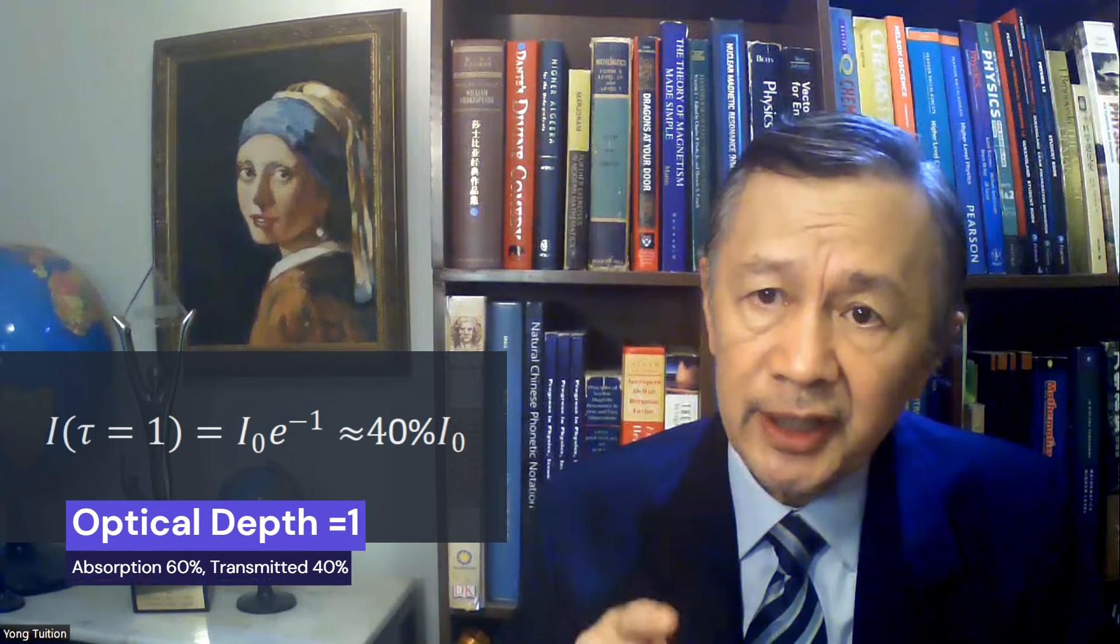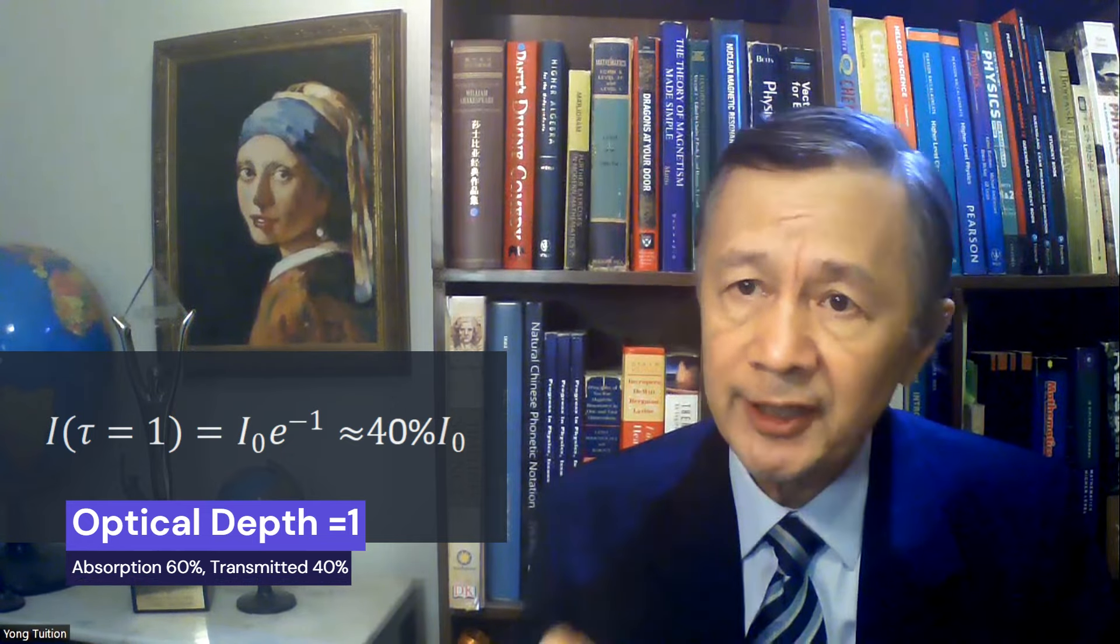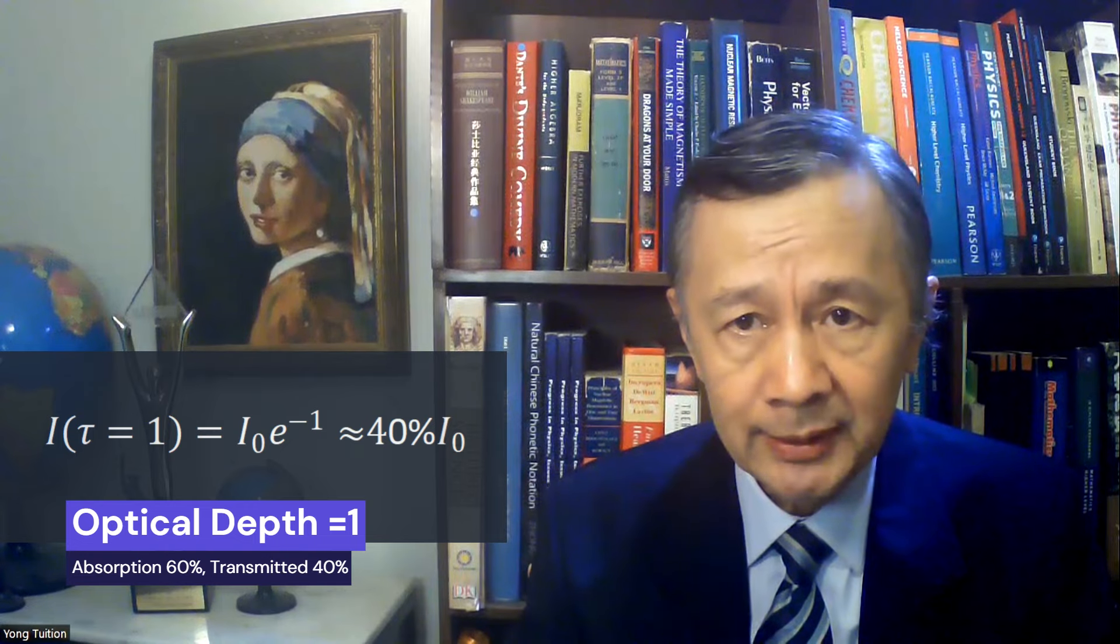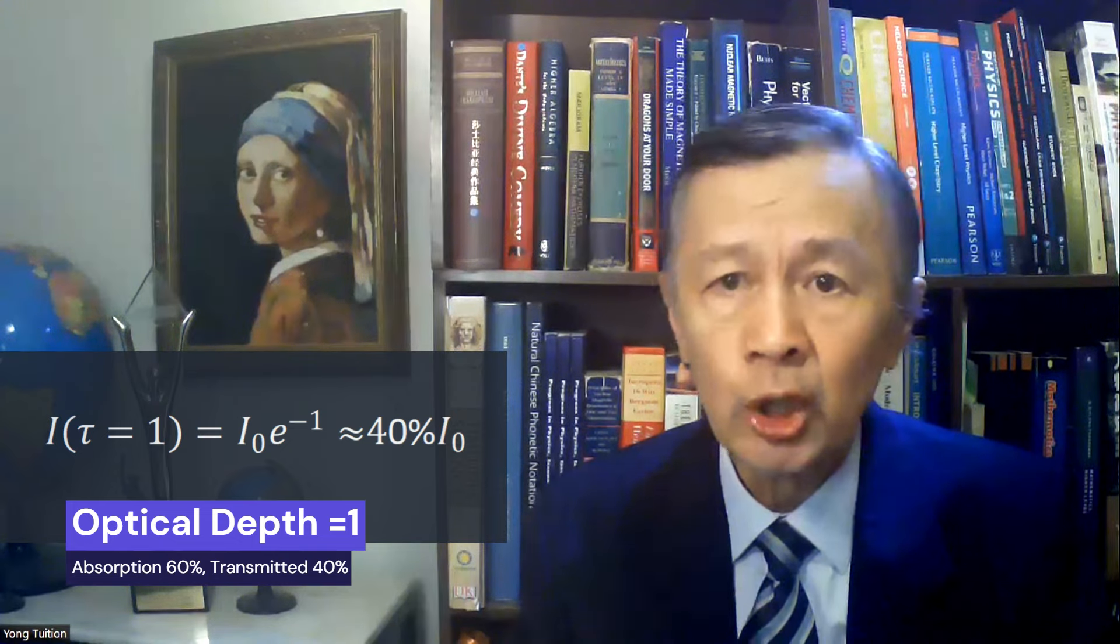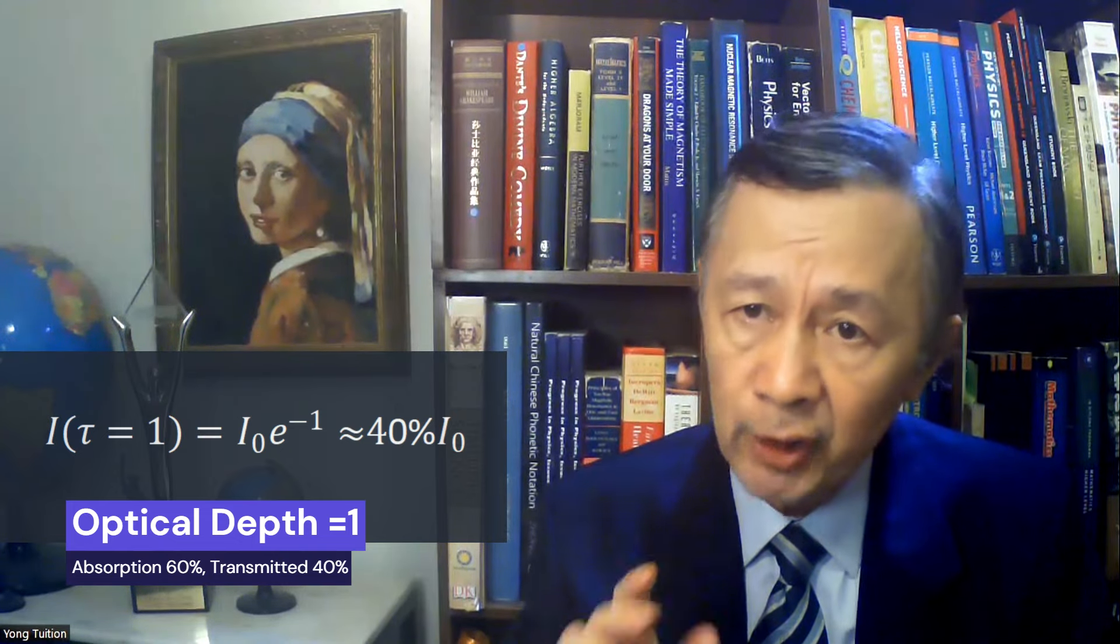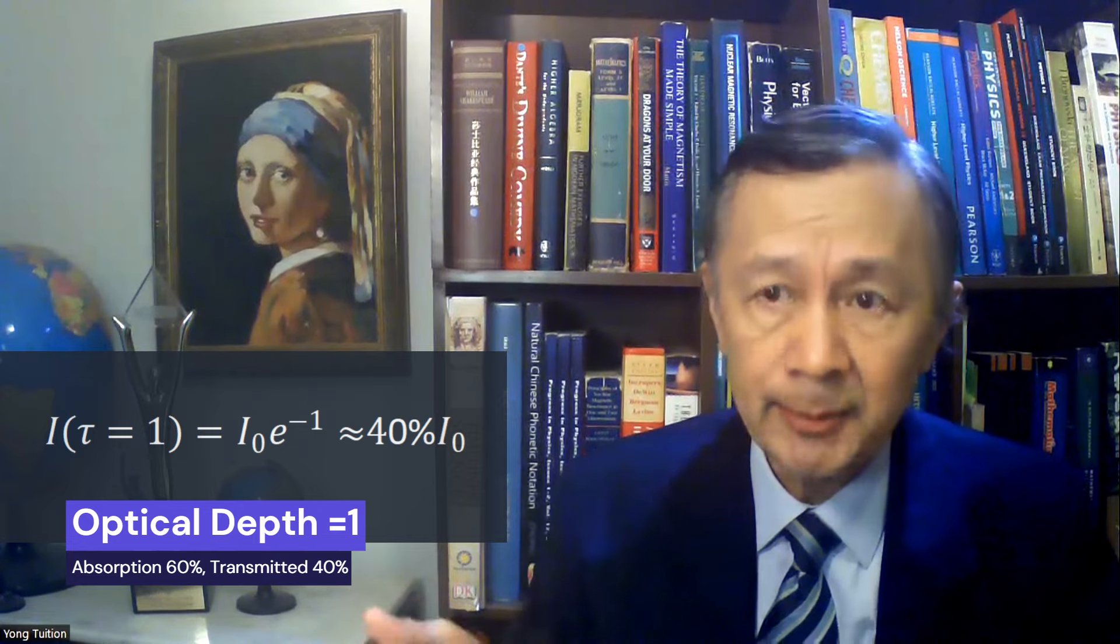In general, when optical depth is much smaller than 1, we say the media is transparent. Whereas, if optical depth is much larger than 1, we say the media is opaque. Well, how about the absorption when optical depth tau equal to 1? From the first equation, it is clear about 60% of incident radiation will be absorbed. That is why value 1 for optical depth has been often used to quantify the absorption by a media, or the atmosphere in our case.